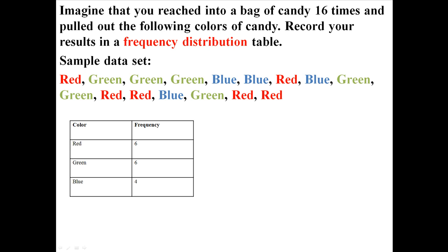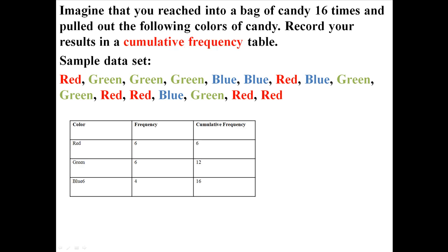And also if you add on another column like this, you can make it into a cumulative frequency table, where as you're going down, you start to add up the frequencies. Like we start with six reds, and below that we have six reds and six greens. And below that we have six reds, six greens, and four blues to make up 16, which is how many different pieces of candy we pulled out of the bag.